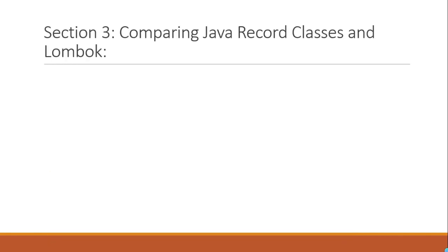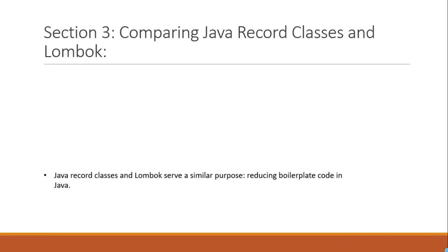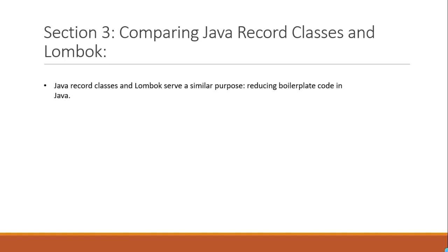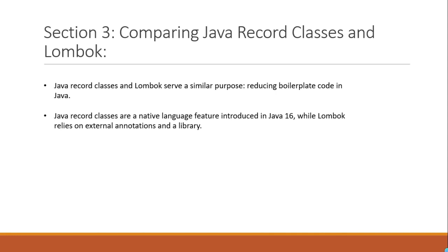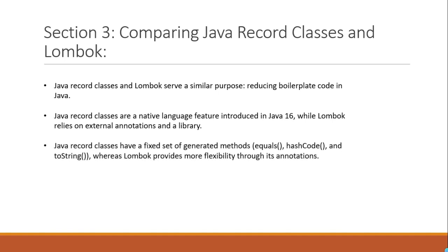Section 3: Comparing Java Record Classes and Lombok. Java Record Classes and Lombok serve a similar purpose: reducing boilerplate code in Java. Java Record Classes are a native language feature introduced in Java 16, while Lombok relies on external annotations and a library. Java Record Classes have a fixed set of generated methods — equals, hashCode, and toString — whereas Lombok provides more flexibility through its annotations.